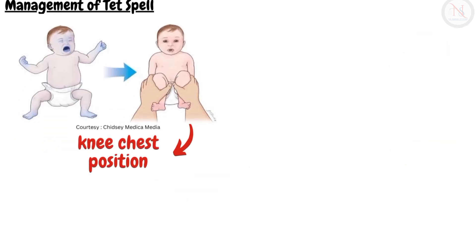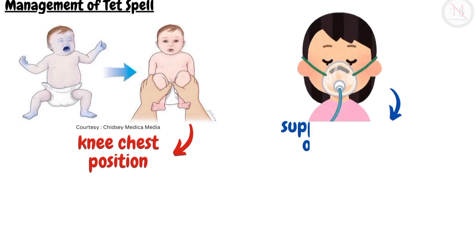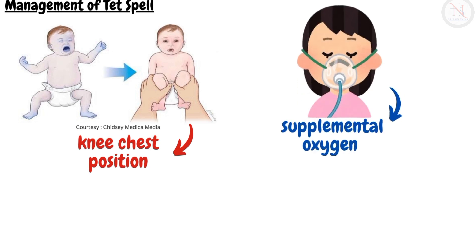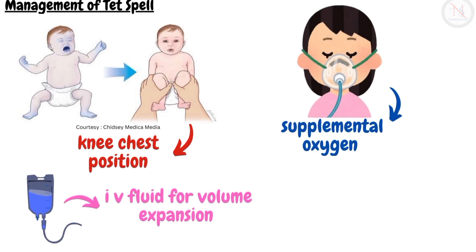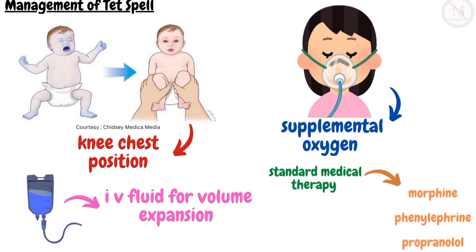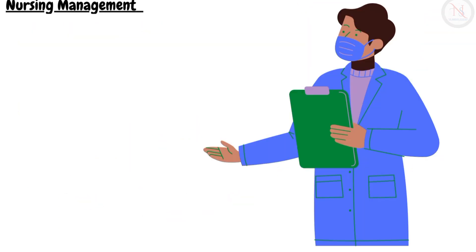Management of tet spells involves placing the infant in a knee-chest position, which improves blood flow to the lungs, giving supplemental oxygen, and providing IV fluids for volume expansion. If the tet spell continues, standard medical therapy includes morphine, phenylephrine, and beta blockers like propranolol.